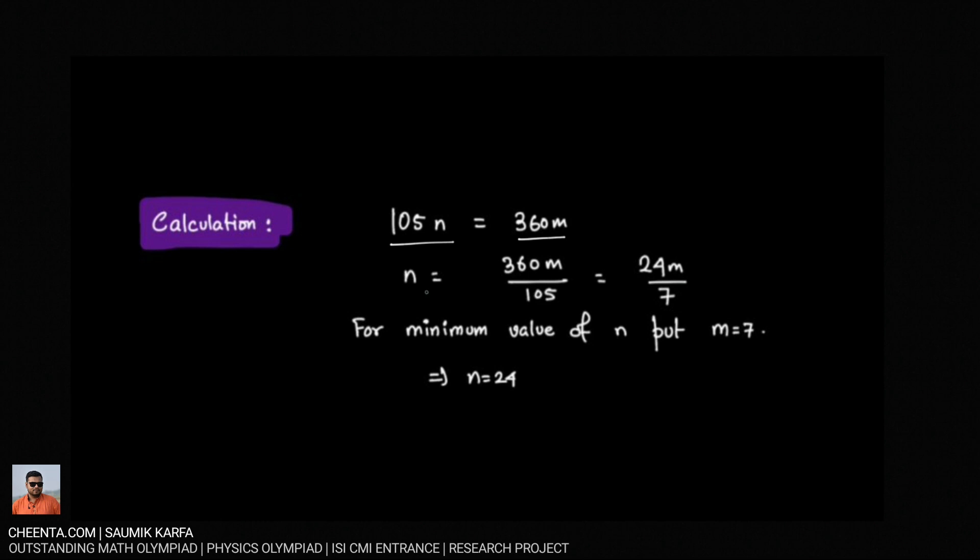So solving this equation we get n equals 24m over 7. As we want the minimum possible value of n, this n is definitely an integer because n is the number of chords. So the smallest possible value of n will be obtained if we put m equal to 7 and that gives us the value n equal to 24. So minimum number of chords we have to create to come back to the original point should be 24.